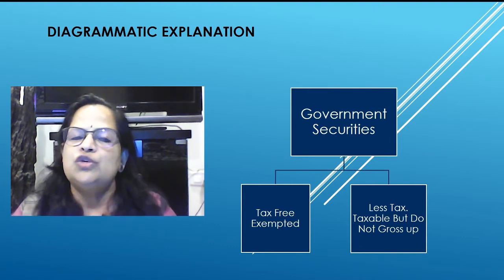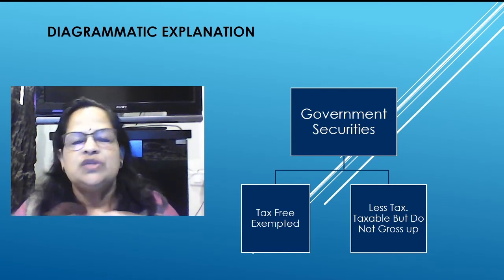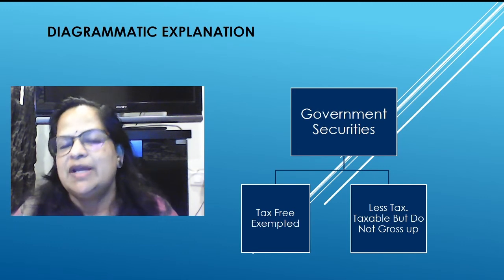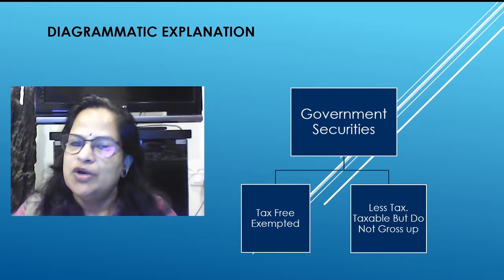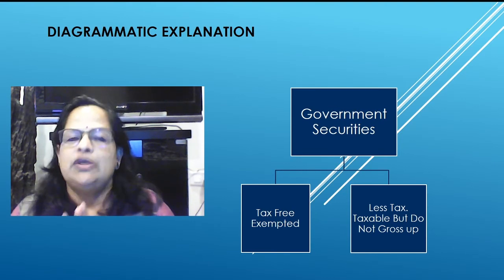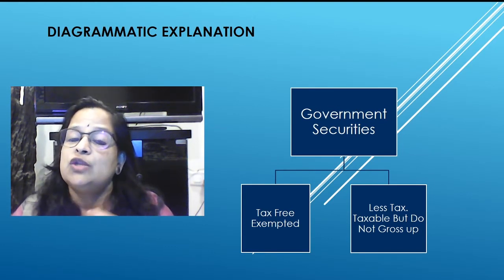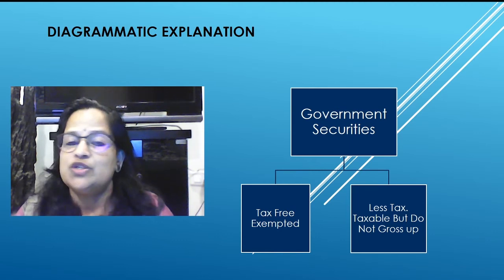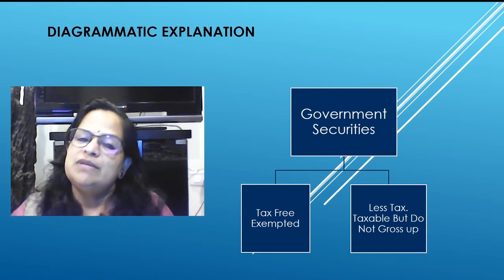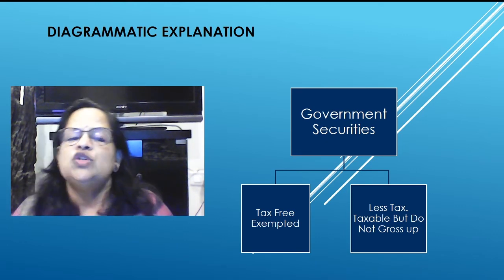There are two types of securities: government securities and commercial securities. Government securities are completely issued by the government — central government, state government, or any statutory body like RBI. Governments issue securities to finance infrastructure, deficit budgets, or military operations. Two types of government securities exist: tax-free, meaning exempted from tax, and less-tax, meaning TDS has already been paid by the issuing organization.